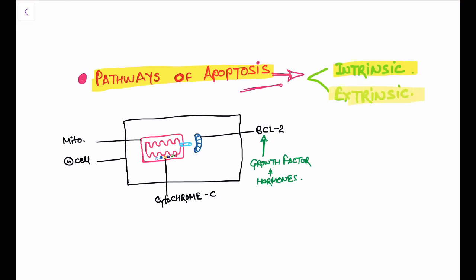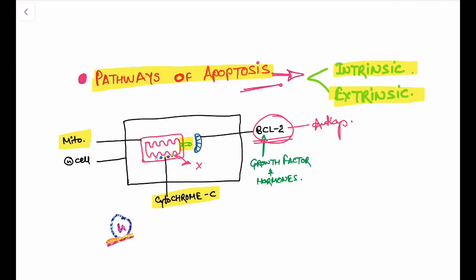Before discussing pathways, we need some background about the normal process inside the cell. We have a pigment called cytochrome C which is present inside the mitochondria. Due to some channels in the mitochondrial membrane, cytochrome C cannot go out into the cytoplasm because we have a gatekeeper-like molecule called BCL-2, which is an anti-apoptotic gene.